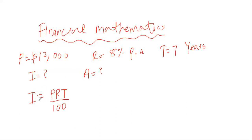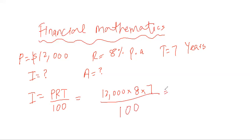Keep that formula in mind. We have four things: I is simple interest, P is principal amount, R over 100 represents rate percent, and T represents time. If any three things are given, you can always find the fourth. Plugging in: P is 12,000, R is 8, and T is 7, divided by 100. The two zeros cancel out, giving you 6,720.